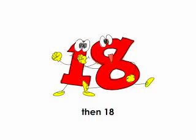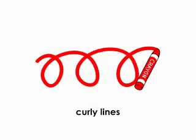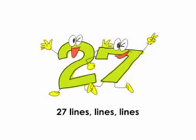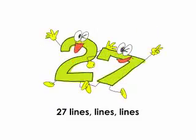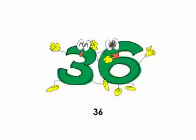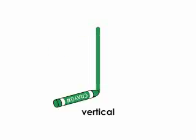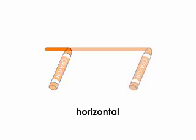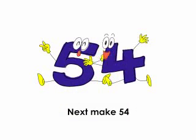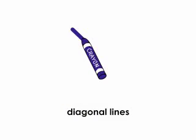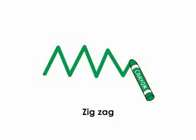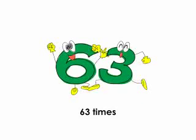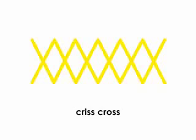then 18 curly lines. Wavy lines are 27 lines, lines, lines. 36 vertical, 45 horizontal. Next make 54 diagonal lines.